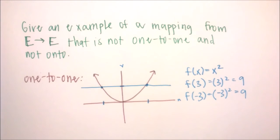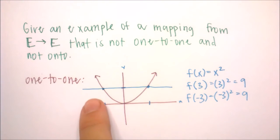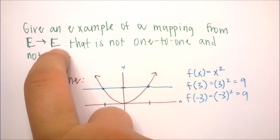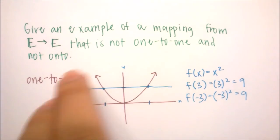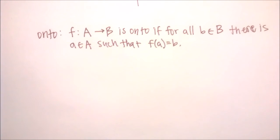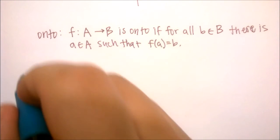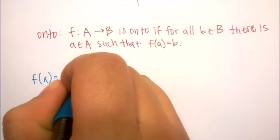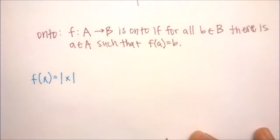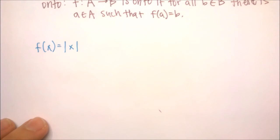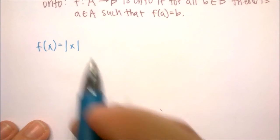So let's look at our example. We want a function that maps from even integers to even integers that is not one-to-one and not onto. Let's consider the function f(x) = |x|. Our domain is even integers, so let's pick an element from there — let's say 2.